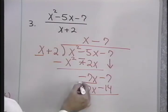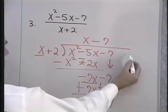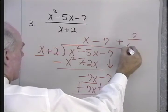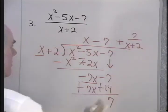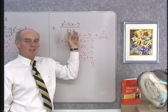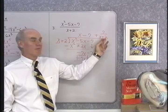Now, I want to subtract, and I do that by changing the signs and adding. Negative 7 plus 14 is going to be positive 7. There's no other terms to write down, so I write this as 7 divided by x plus 2. So, x squared minus 5x minus 7 divided by x plus 2 is x minus 7 plus 7 over x plus 2.